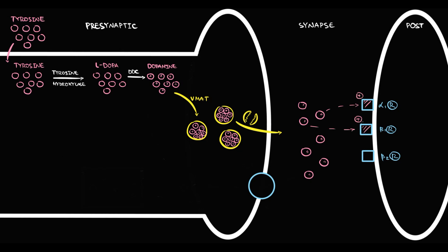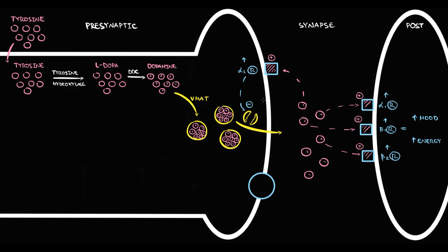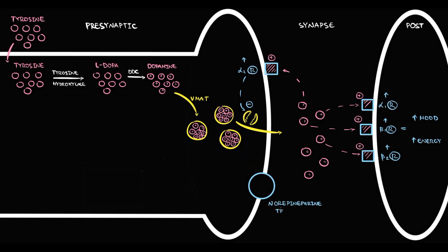On the postsynaptic neuron we have numerous adrenergic receptors: alpha-1, beta-1, and beta-2 receptors. Once norepinephrine molecules appear in the synapse, most of them immediately bind to adrenergic receptors. With binding they activate adrenergic receptors, and activation of adrenergic receptors improves mood and increases energy. Some of the norepinephrine molecules bind to the alpha-2 receptor on the presynaptic neuron, which is an autoreceptor. With activation, this receptor inhibits the exocytosis of norepinephrine vesicles into the synapse, providing reciprocal regulation.